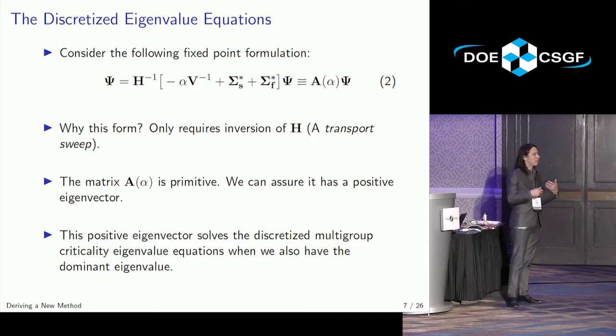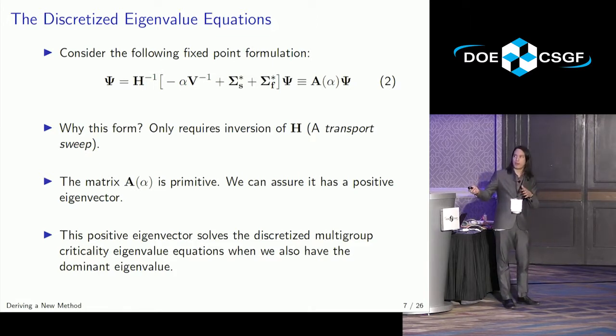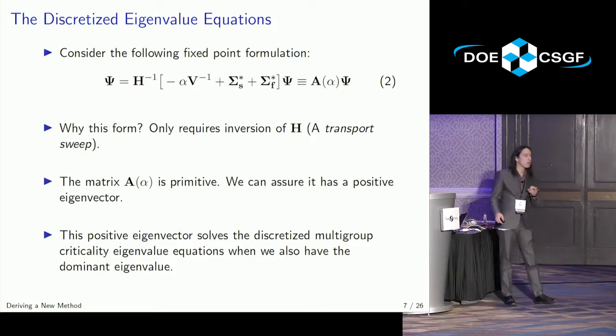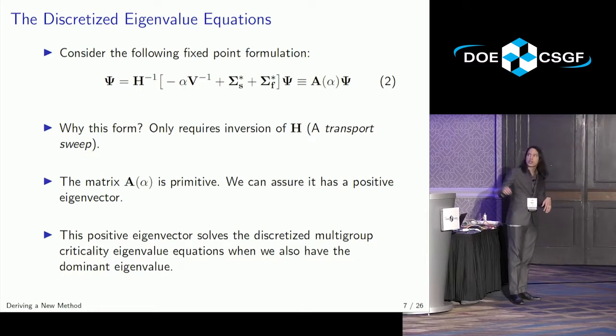So H inverse, what is effectively inverting a matrix, is done through a sort of physical process. We picked this form because we hope that any sort of fixed-point method that we derived should be easily and quickly implementable in any sort of production neutron transport code maintained by universities or national labs. I will make this claim that the matrix, when I define the matrix A, is primitive.